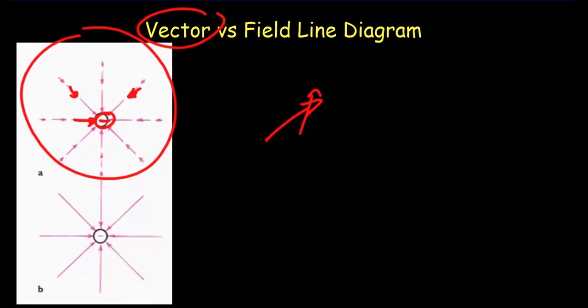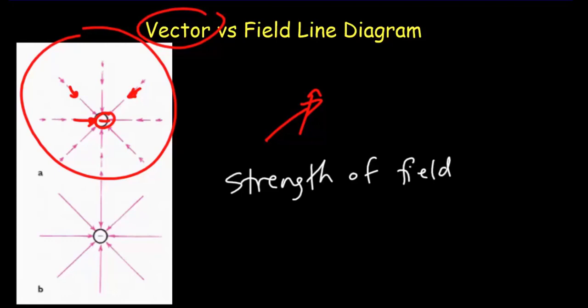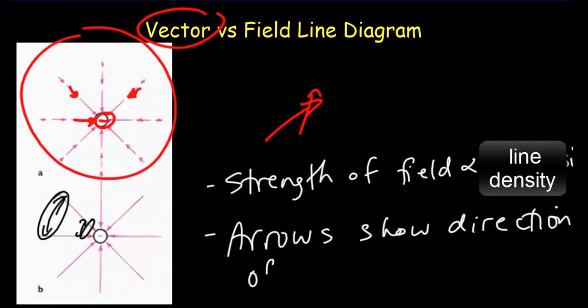The field line diagram shows you how strong the field is by how close the lines are together — the stronger the field, the greater the line density. From this diagram, I can tell I've got a fairly weak field when I go out farther and a fairly strong field when I'm in close, because there's a large gap between lines out here and just a little gap in close. Arrows show the direction of the field, and it's always going to be the same direction as the force on a positive charge.